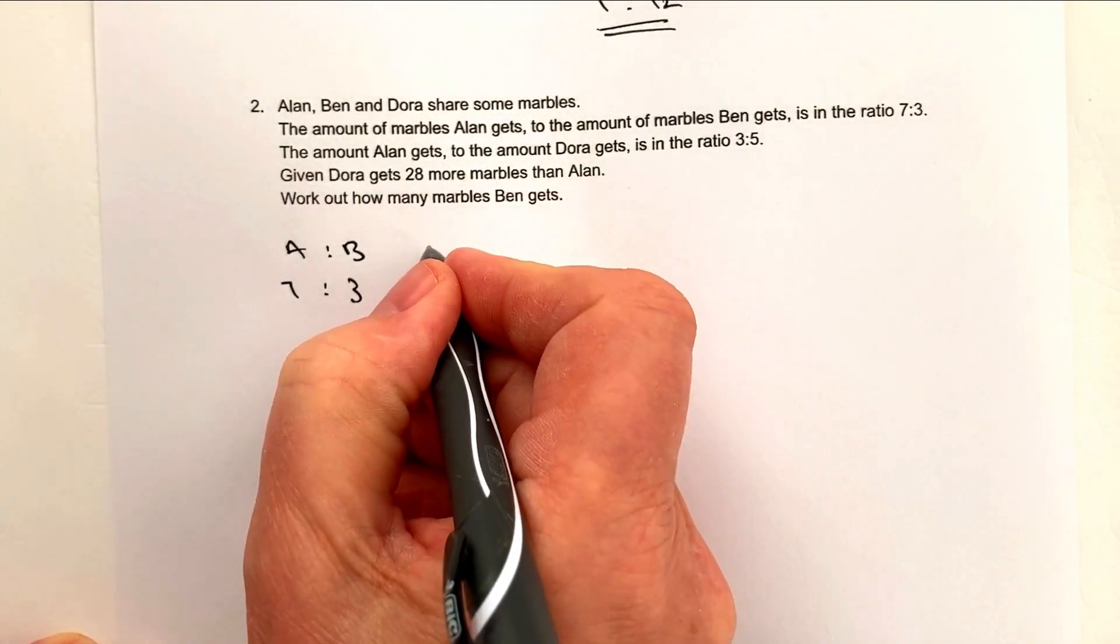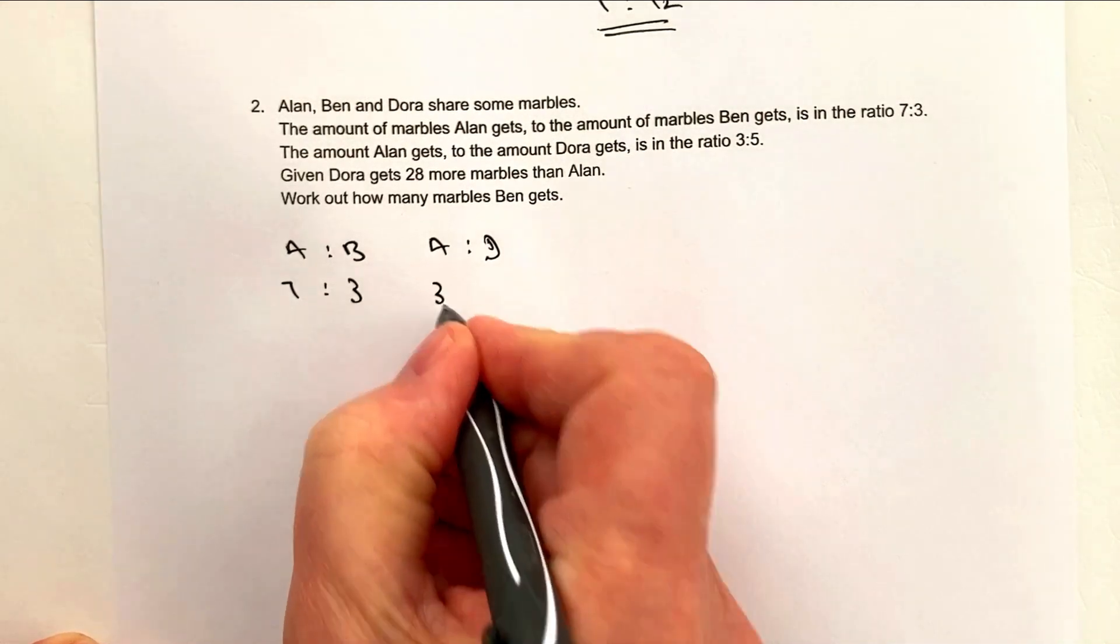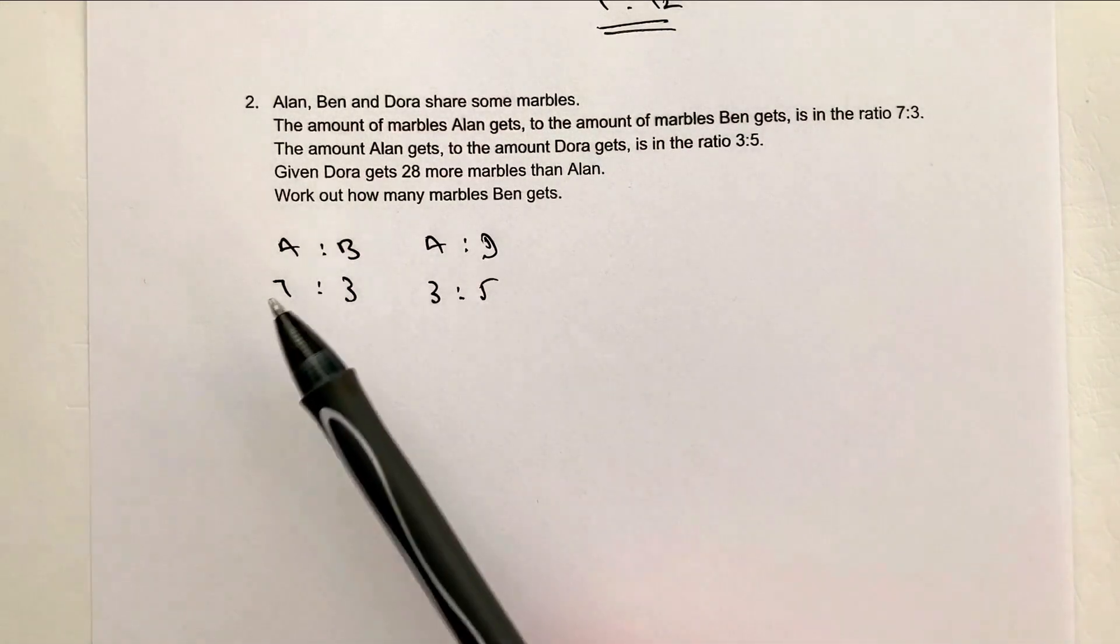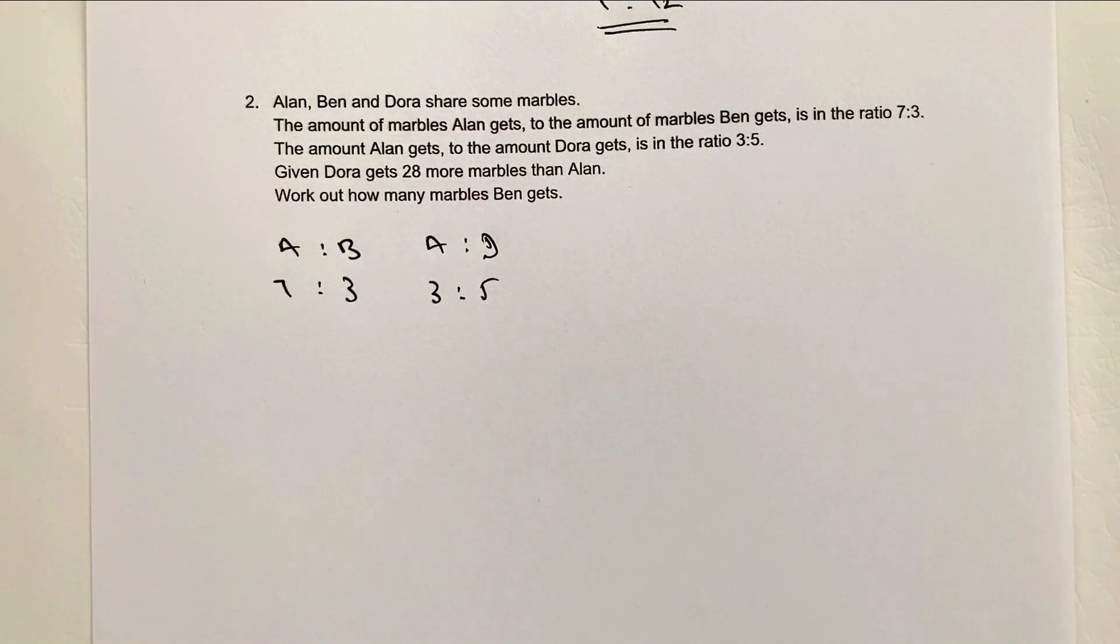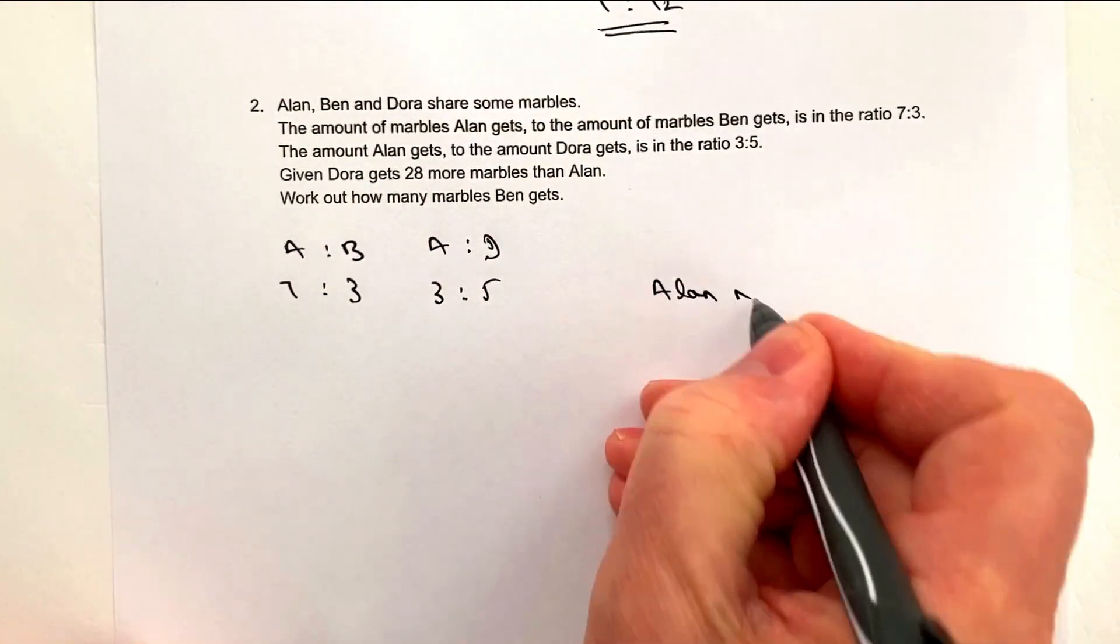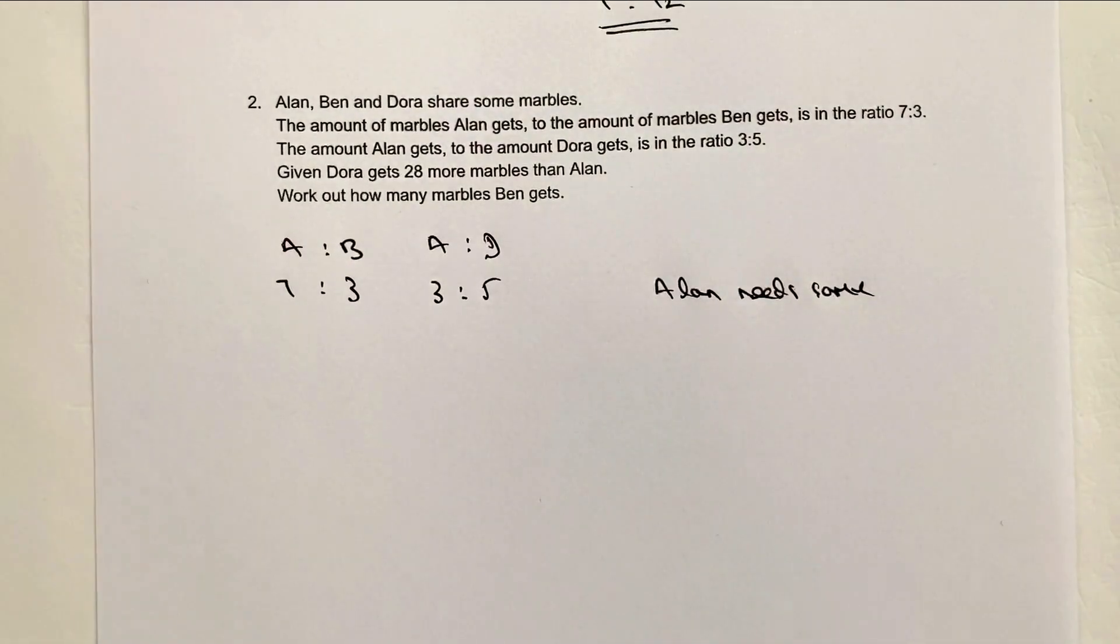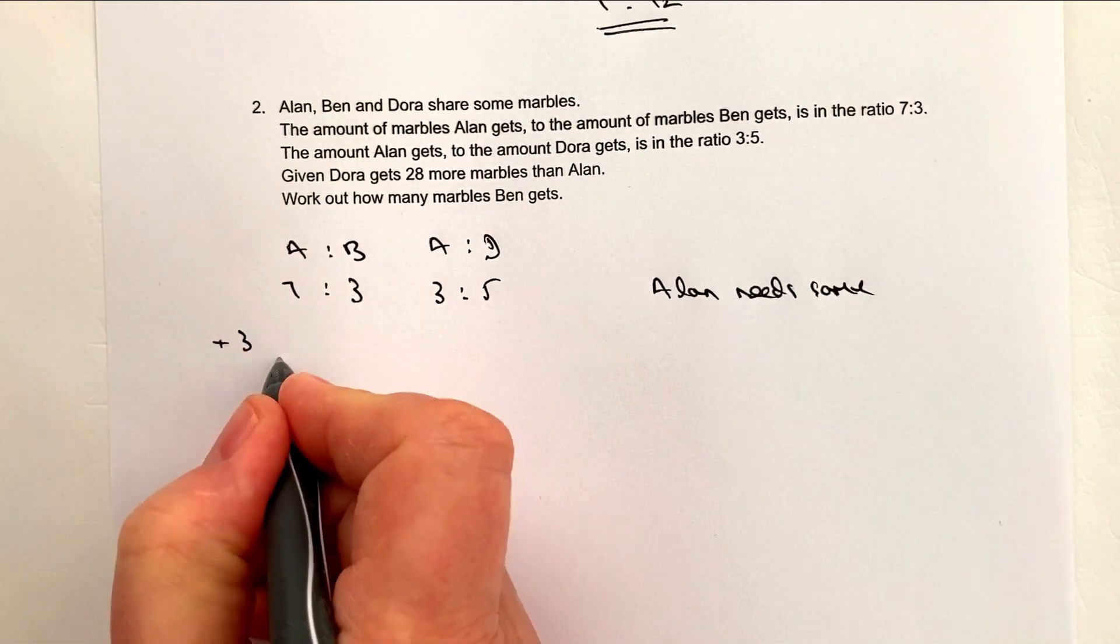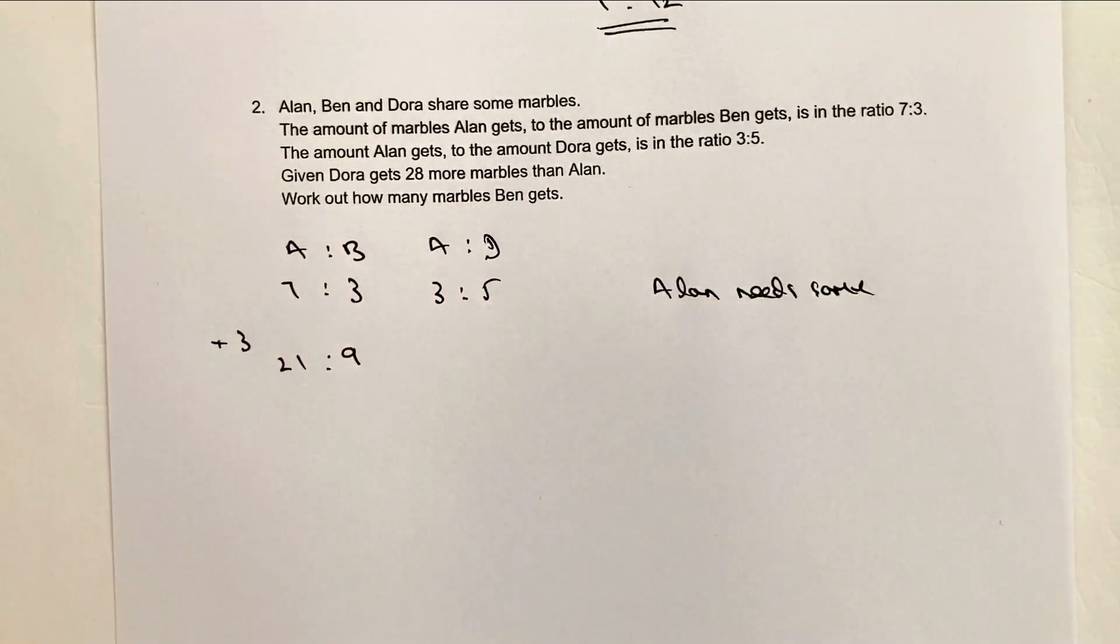And then we've got Alan to Dora, and that's going to be in the ratio of 3 to 5. So again, immediately we've got a problem because we've got 7 for Alan, but only 3 for Alan here. So what we need to do is make Alan have the same amount of marbles. So in order to do that, what I'm going to do is I'm going to multiply this ratio by 3, because if I do that,